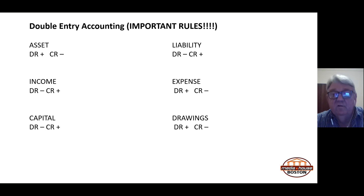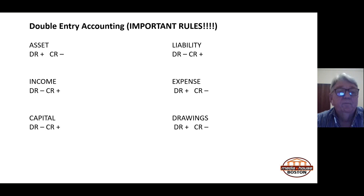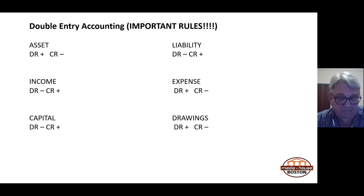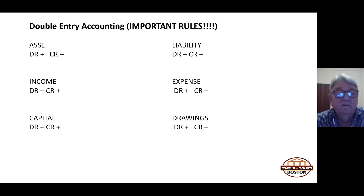Liabilities are commitments the company has to pay someone currently or in the future — the opposite of assets. If you debit a liability, you reduce it. For example, if you owe the bank ten thousand rand and pay one thousand, you debit the liability by one thousand, reducing the balance to nine thousand. If you borrow another five thousand rand, you credit the liability and it increases. When we start doing accounting entries, you will see how this works.